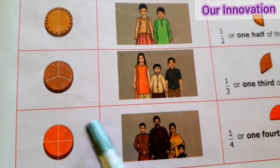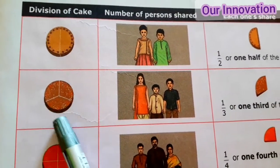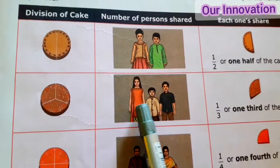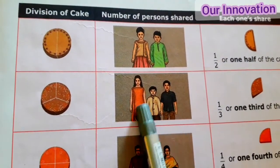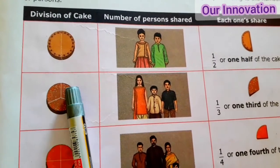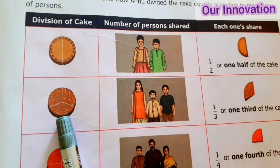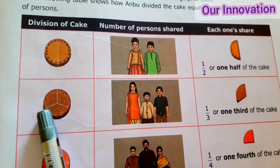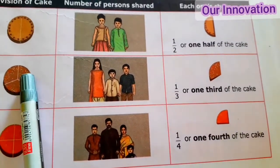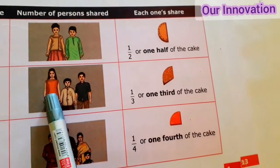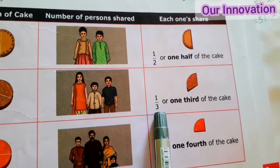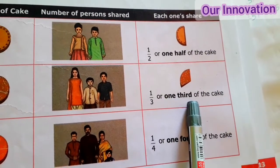Here we have 3 members — 1, 2, 3. So 3 members, 3 numbers. The fraction is 1 by 3.